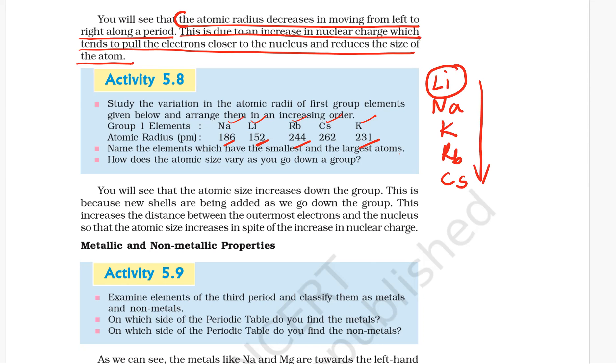Name the elements which are the smallest and largest atoms. Lithium has the smallest atom and cesium has the largest atom.